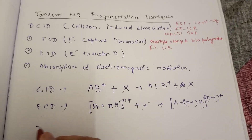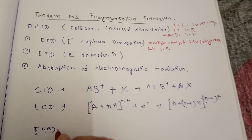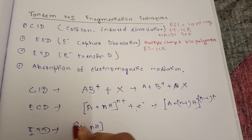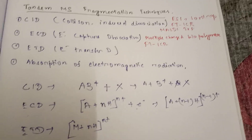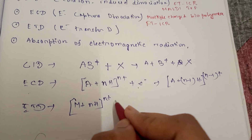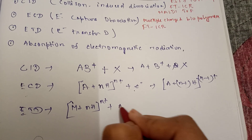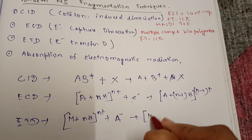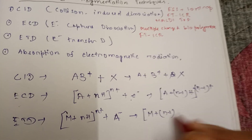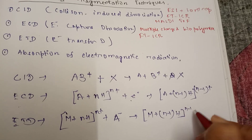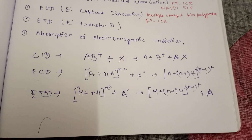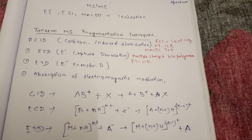ETD, electron transfer dissociation, is something similar. Here also there will be a positive ion, and it will receive one electron from an anion — let's say the anion A minus. So what will happen is M plus N minus 1 into H, giving N minus 1 plus charge, and A will be neutral. So this is the main idea of tandem mass spectrometry.